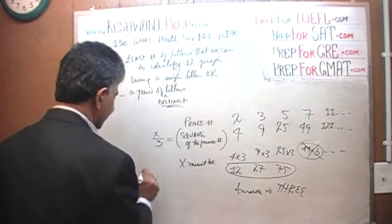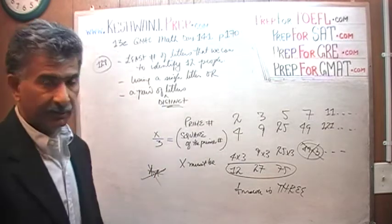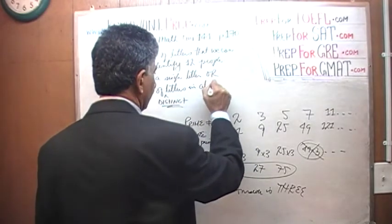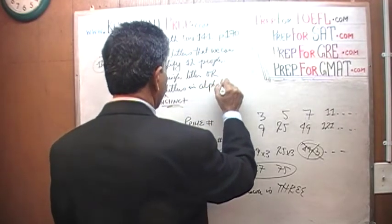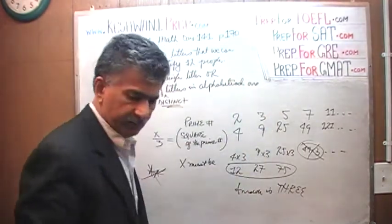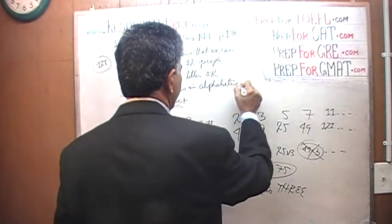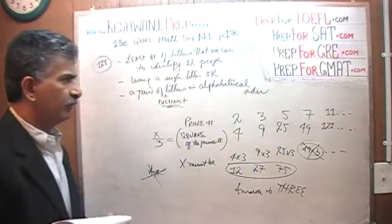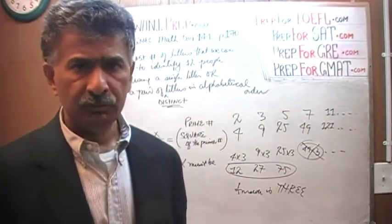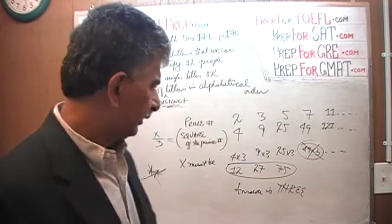In other words, we cannot use 'AA' — that would not qualify as a pair because these are not distinct letters. The pair has to be distinct letters, and they have to be in alphabetical order. So we can use either a single letter or two letters; if two letters, they must be in alphabetical order and cannot repeat.